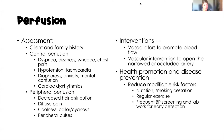For peripheral perfusion, signs include decreased hair distribution on the lower extremities, diffuse pain of the lower extremities, coolness, pallor, and cyanosis of those extremities — because blood carries oxygen and we're not getting good blood flow down to those extremities. Peripheral pulses will also be diminished.